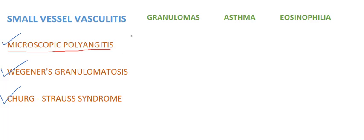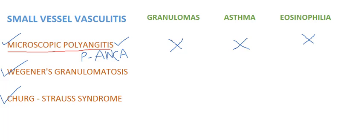The differentiating features between these three: in microscopic polyarteritis, it is commonly associated with P-ANCA, antineutrophil cytoplasmic antibody. In microscopic polyarteritis, there will be no granulomas, no asthma, and no eosinophilia. Lungs are affected in microscopic polyarteritis, but there will be no asthma, no eosinophilia, and no granulomas.